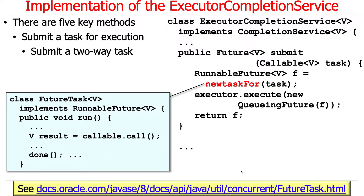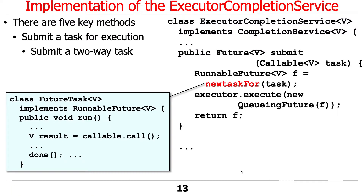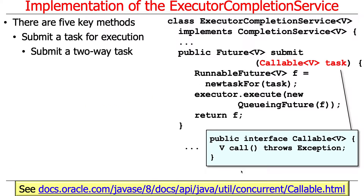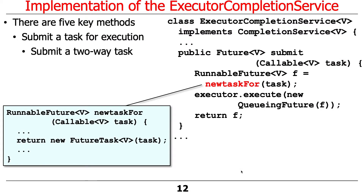To summarize the layering: we are passed a callable — the one that's actually going to do the work. We take that and wrap it up; we get back a runnable future. If you look closely, the newTaskFor adapter method is going to call new FutureTask. So it makes a FutureTask, and a FutureTask implements the runnable future interface, meaning it has a run method.